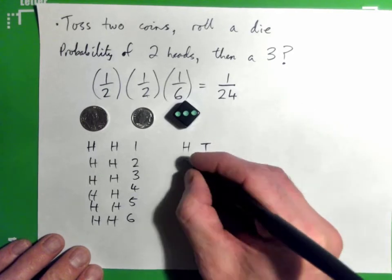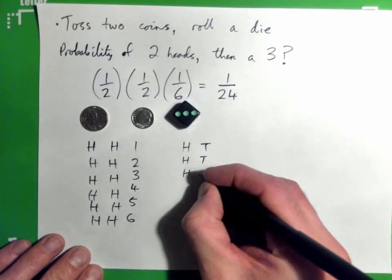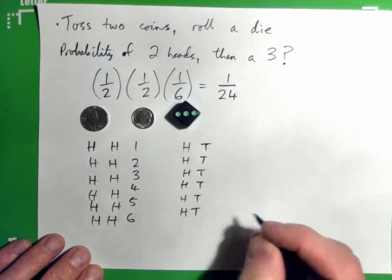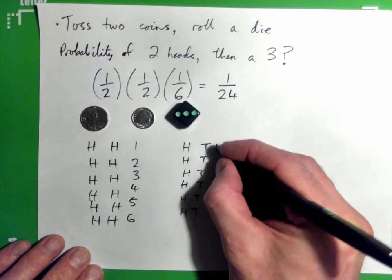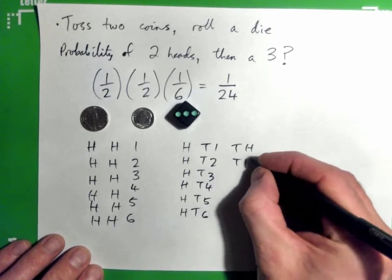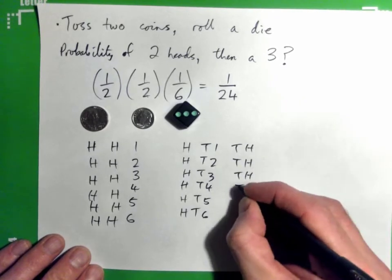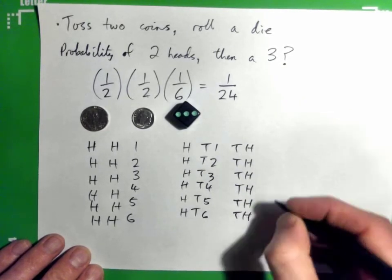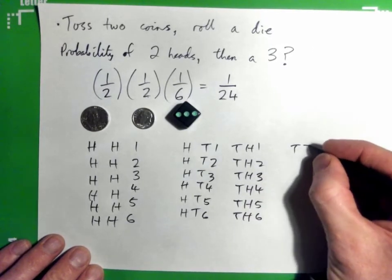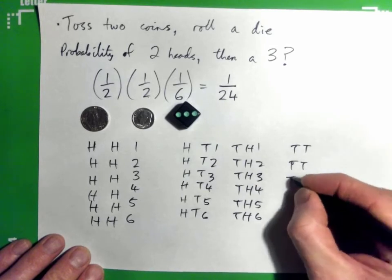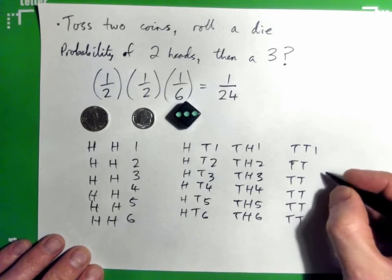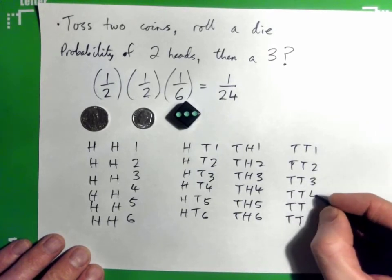But the coins may not fall like that. It could be head-tail, or tail-head, or tail-tail — each paired with a one, two, three, four, five, or six on the die. You can see there are lots of things that could go wrong when we're trying to get head, head, then a three.